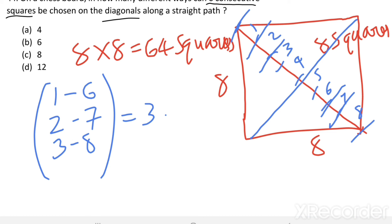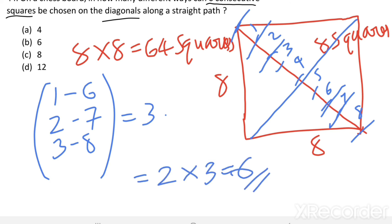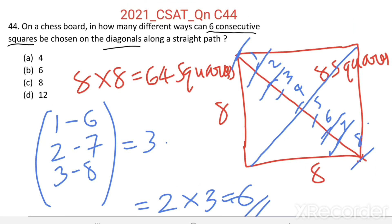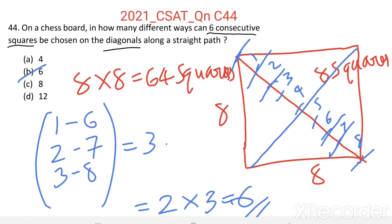There are two diagonals on a chess board, so the total number of ways to choose six consecutive squares along the diagonals equals two multiplied by three, which equals six. Option B is the right answer.